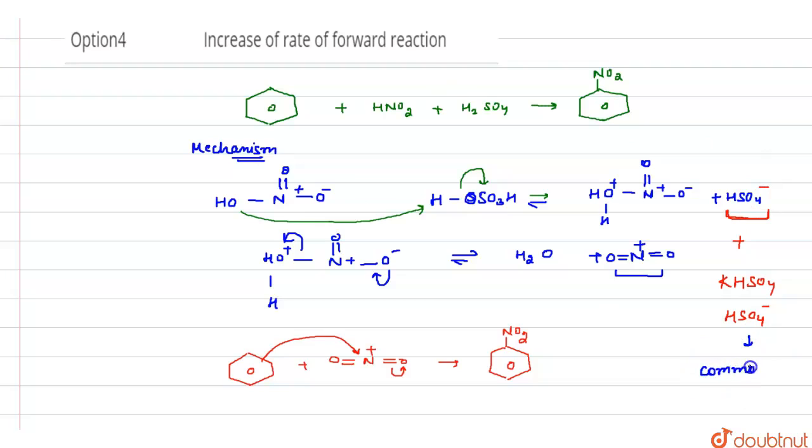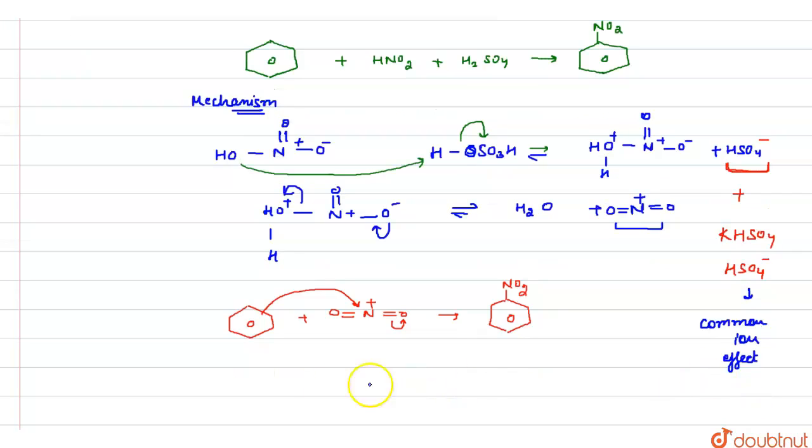Common ion effect occurs, due to which if we apply the Le Chatelier principle, then what we see here is that the compound on the right-hand side, concentration of compound on the right-hand side increases. If any of the concentration increases, then according to Le Chatelier principle, the opposite side of the reaction is favored.